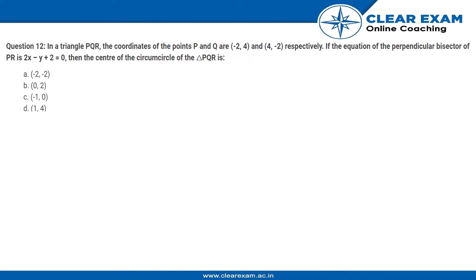So we have a triangle PQR and the coordinates of points P and Q are given to us. If the equation of the perpendicular bisector of PR is this, we need to find the center of the circumcircle. That is the coordinate of the circumcenter.